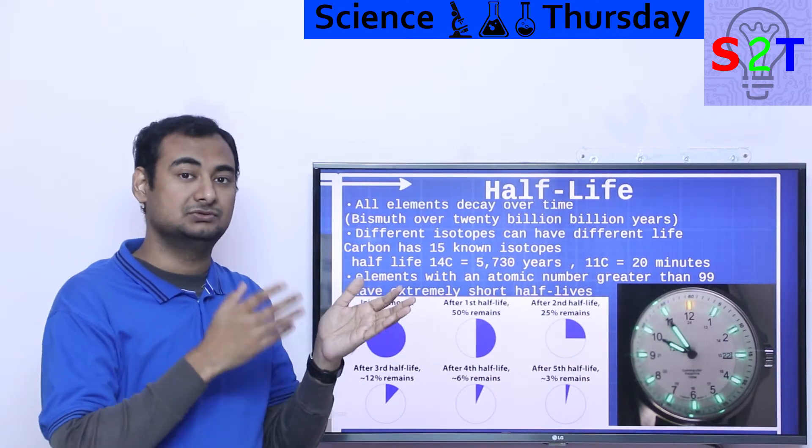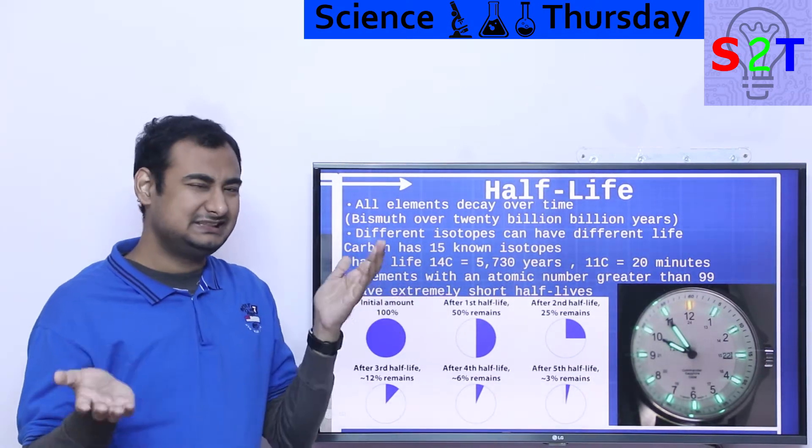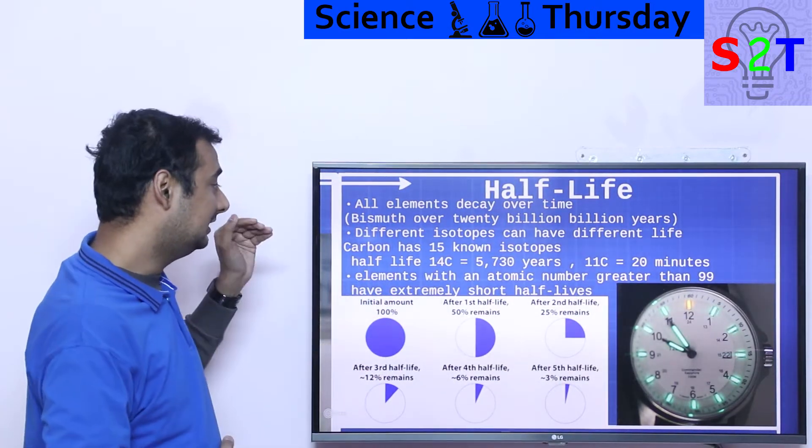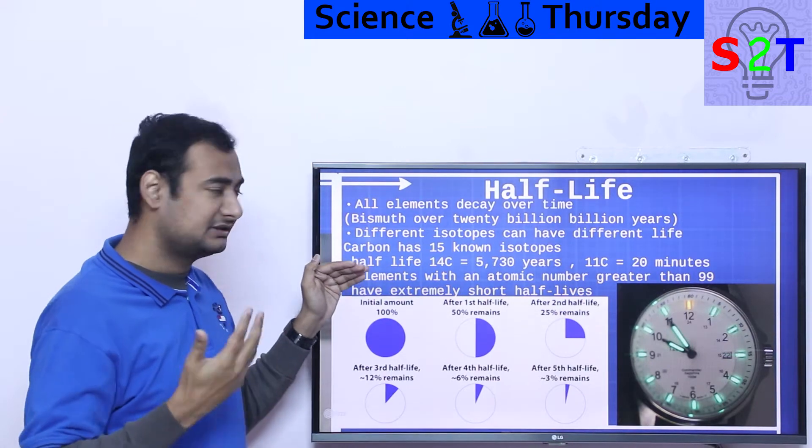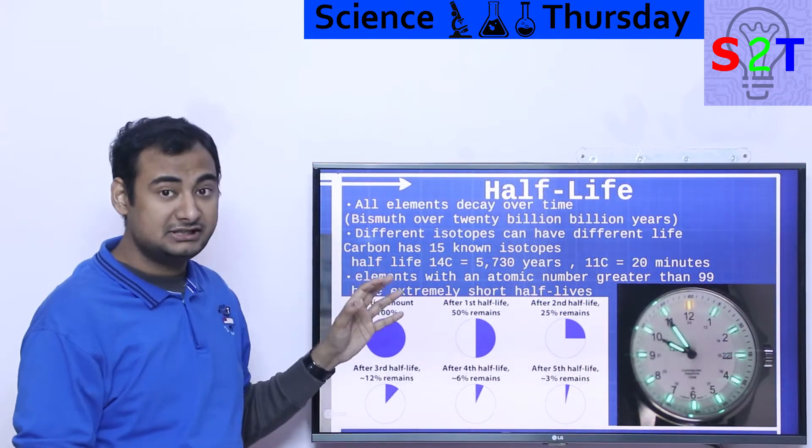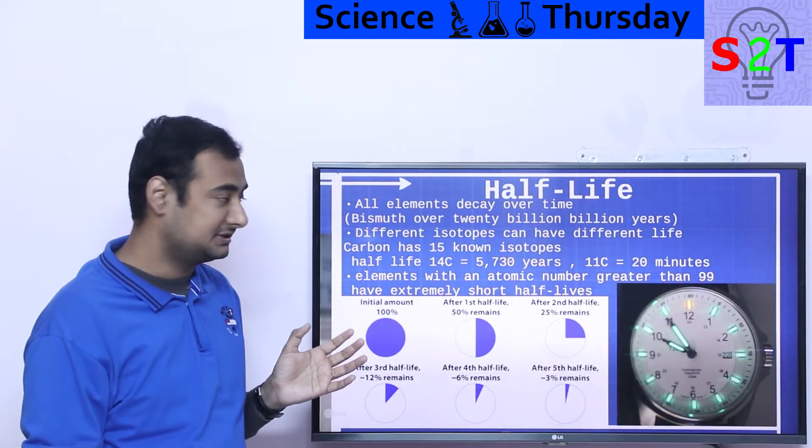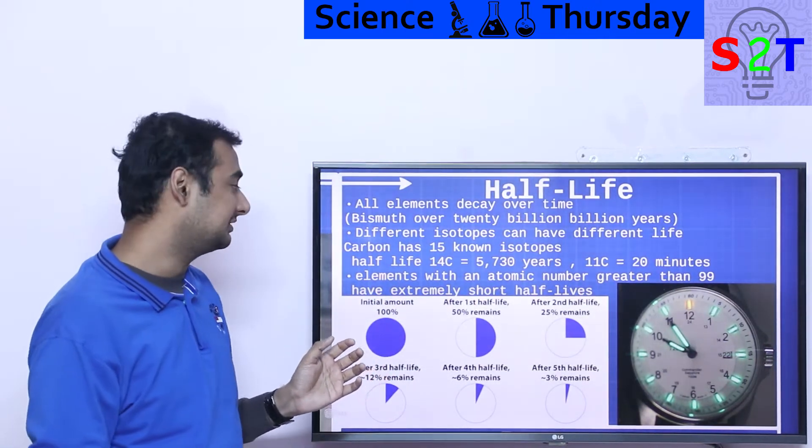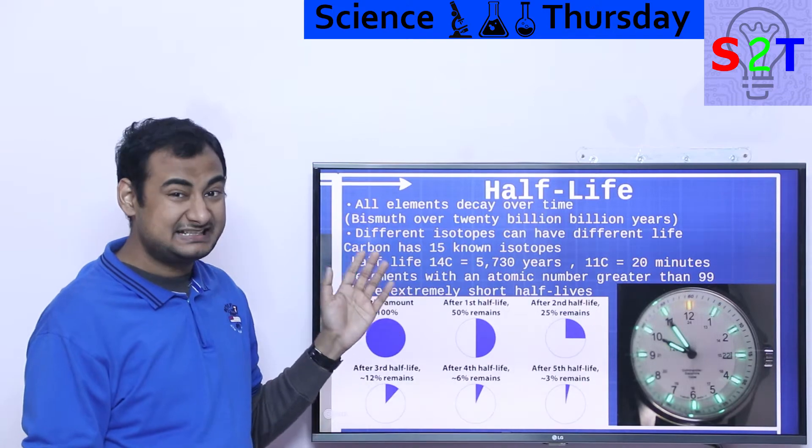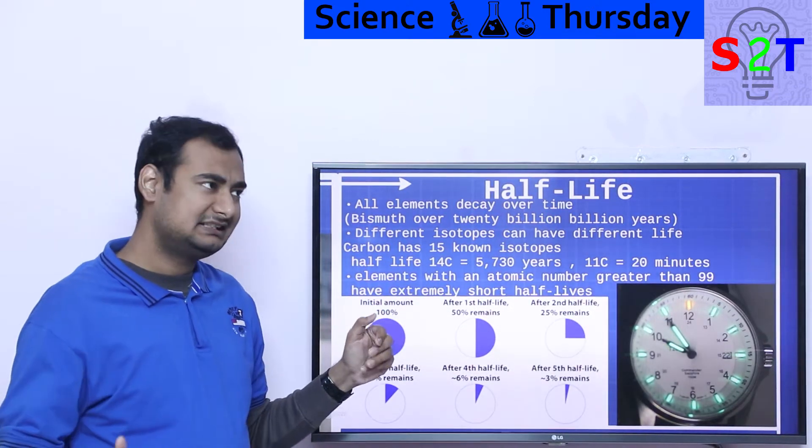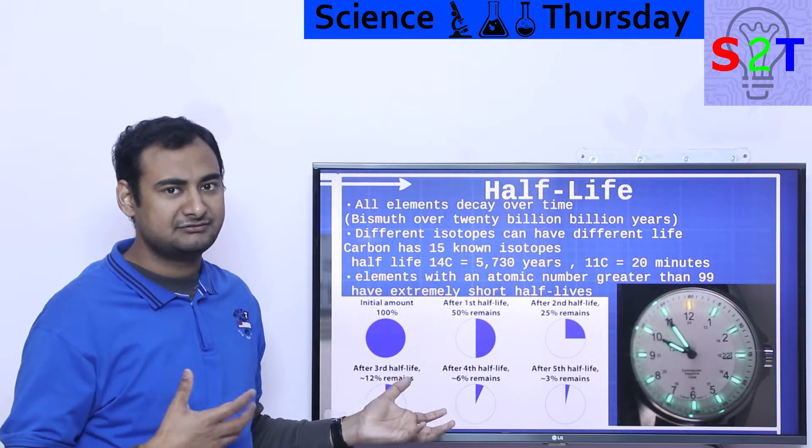Different isotopes have different lifespans. This is a very critical aspect to understand. When somebody is comparing carbon to nitrogen, that's not a fair comparison because you have to specify which isotope. To give you context, let's say you take carbon. We have C6 carbon, but we know around 15 known isotopes of carbon exist.